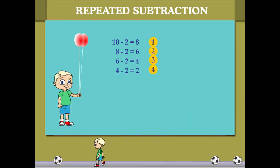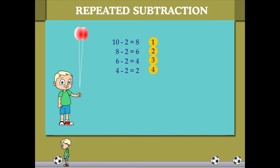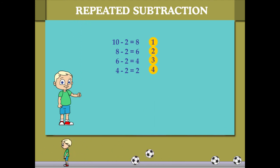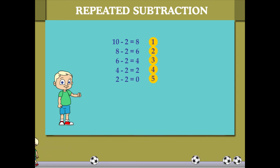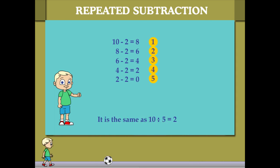The fourth time, two balloons fly away again, leaving 4 minus 2 equal to 2 balloons. The fifth and last time, two more balloons fly away: 2 minus 2 is 0. Repeated subtraction is division — 10 divided by 5 is 2.